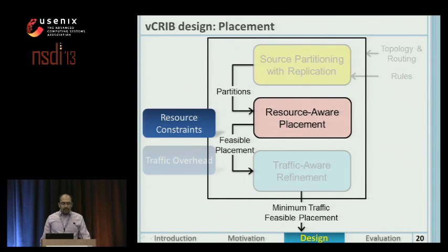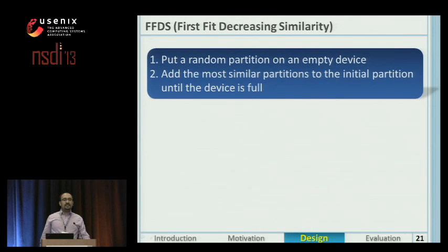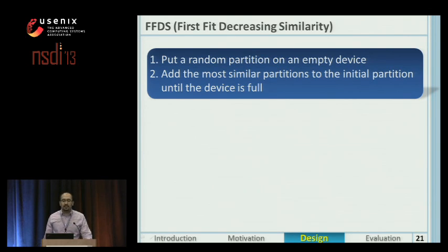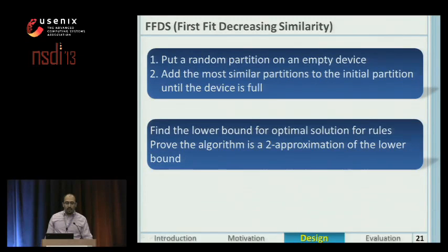But we have a two-step approach to address that problem. In the first step, we generate a feasible placement using a resource-aware placement algorithm. In the second step, we refine that feasible placement to minimize the traffic overhead. Finding a feasible solution is similar to a bin-packing problem, but with objects that can overlap with each other. To find the best solution, it is important to consider the overlapping of objects caused by the similarity of partitions. We present a first-fit decreasing similarity algorithm that first puts a random partition on an empty device and then adds the most similar partitions to the initial partition until the device is full, and does that for all devices to accommodate all partitions in the network. We found a lower bound for the optimal solution and proved that this algorithm is a true approximation of that lower bound.